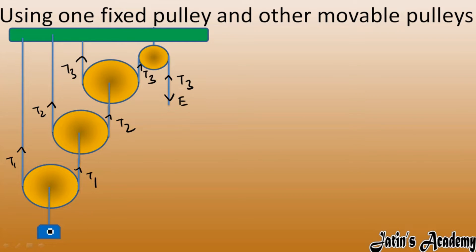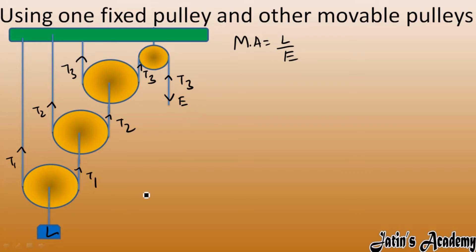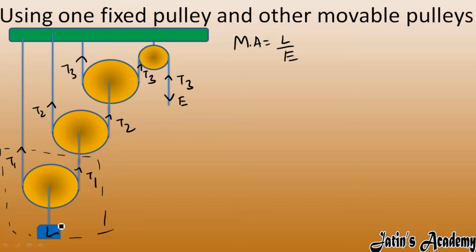Mechanical advantage is calculated as load divided by effort. We'll establish the relationship between load and effort using tensions. Looking at the free body diagram of the first movable pulley: two tensions T1 and T1 act upward, and the load acts downward. So we get: Load = 2 × T1.